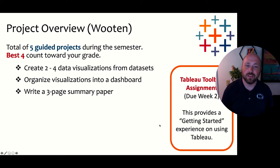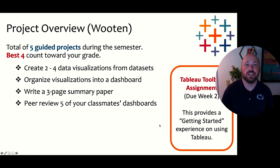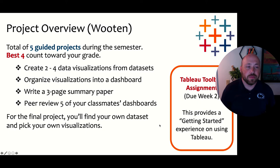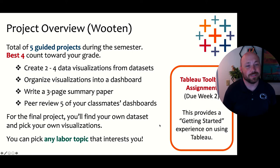They peer review five other students in the class, which is important for understanding what others are doing and getting better at offering criticism. At the end of the semester instead of a final exam they do a final project worth 10% of their grade. They have to find their own data set and pick their own visualizations, though we'll have covered most types throughout the semester. The only limitation is that they must have a labor econ topic that hasn't been covered already — so since one of the first assignments covers unemployment, their final visualization can't simply be on unemployment.